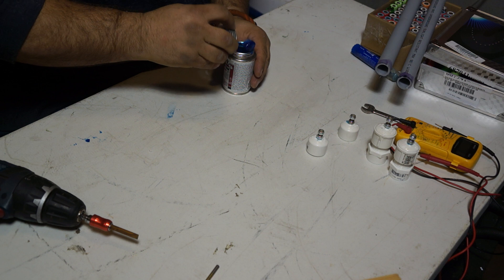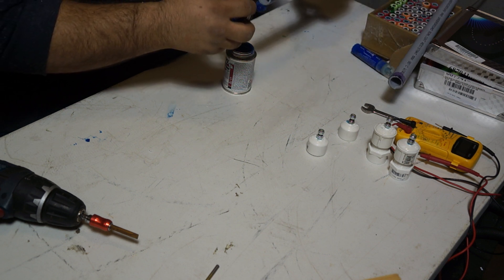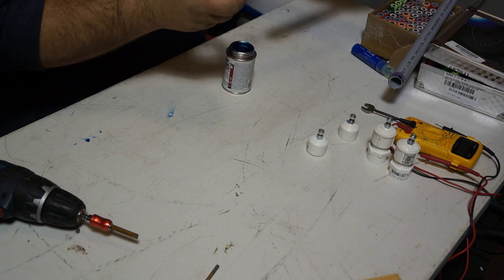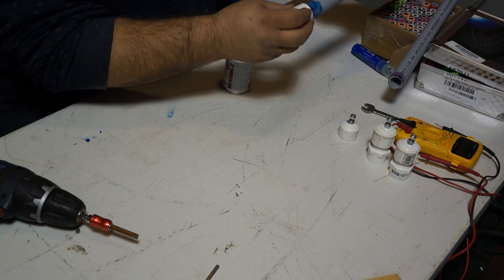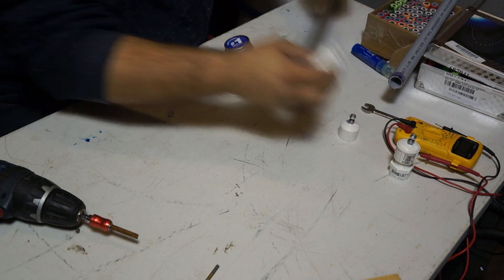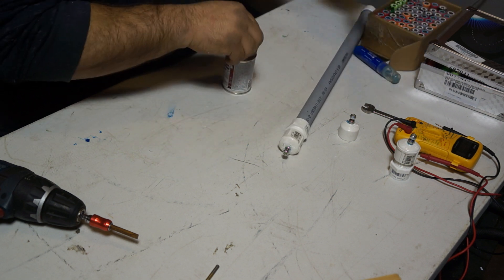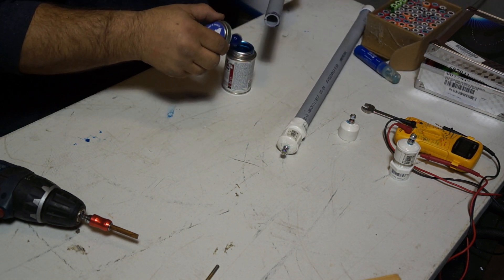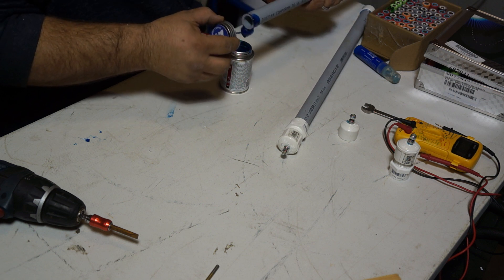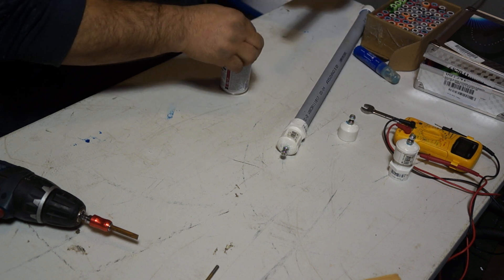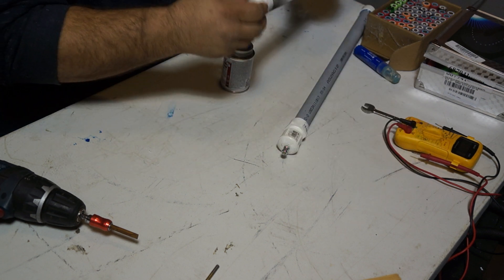Okay, so now we've got our primer on. Get some plumber's glue here. Like I said, this glue is good for everything from conduit to PVC. So one end will get the negative cap and the other end will get the positive cap.